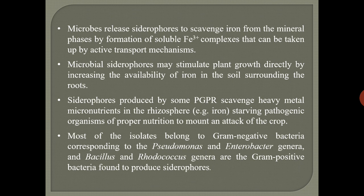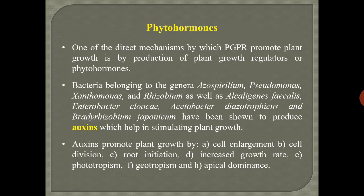Apart from iron, PGPR-produced siderophores can also scavenge heavy metals and make them available for plant growth. Heavy metals are required by plants in very minute quantities and are therefore termed micronutrients. Most isolates that produce siderophores belong to gram-negative bacteria, mainly to the genera Pseudomonas and Enterobacter, but few gram-positive bacteria like Bacillus and Rhodococcus can also produce siderophores.